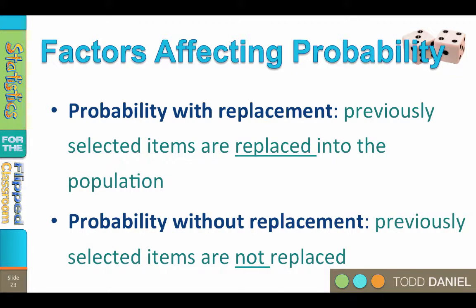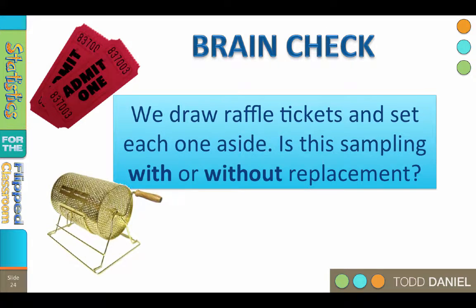Probability without replacement is when the previously selected items are not replaced into the population. If you pick one card and do not replace it, the probability for selecting a second card drops from 1 in 52 to 1 in 51. For example, we're having a raffle. Everybody gets a ticket to win a door prize. We put all of the tickets into a hopper, spin it to randomize them, then draw raffle tickets, read the winning number, and set each one aside. That is sampling without replacement.